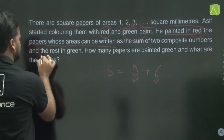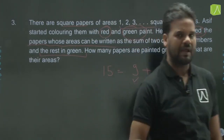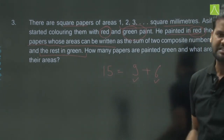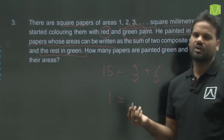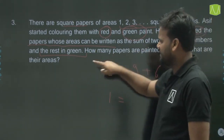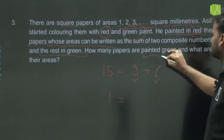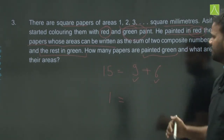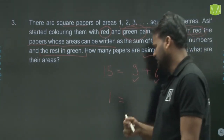The rest are painted green — those that cannot be expressed as the sum of two composite numbers. This includes cases where one or both numbers are prime, or the number involves 1 (which is neither prime nor composite). The questions are: how many papers are painted green, and what are their areas?